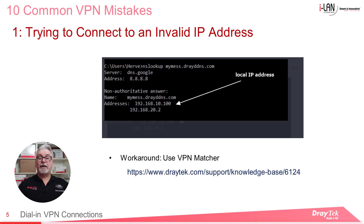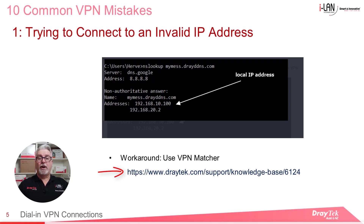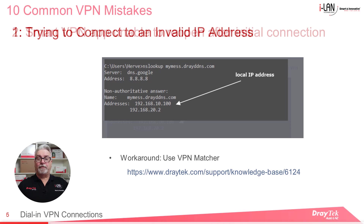Another workaround is to use VPN Matcher on supported Vigor routers. More details on using VPN Matcher can be found in application note number 6124, which is available in the Draytech Knowledge Base. VPN Matcher was also covered in a previous webinar. I'll leave links to both of those in the description below.